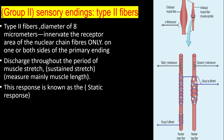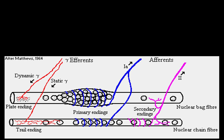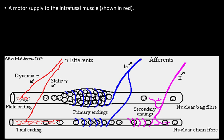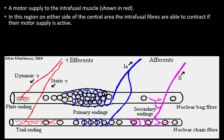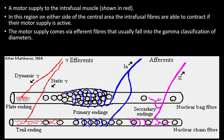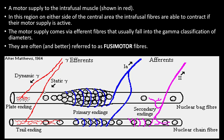The type II fiber discharges throughout the period of muscle stretch and continues until the muscle is relaxed; it mainly measures muscle length. This response is known as the static response. The motor supply to the intrafusal fibers, shown in red, is on either side of the central area. When these motor nerves are activated, the muscle contracts. The motor supply comes via efferent fibers that usually fall into the gamma classification, also referred to as fusimotor fibers because they supply the intrafusal fibers.